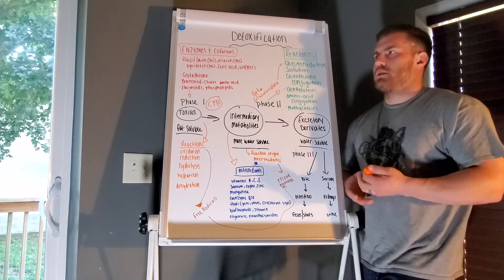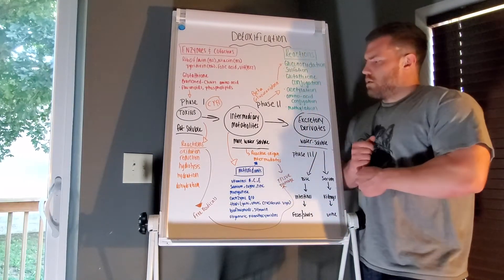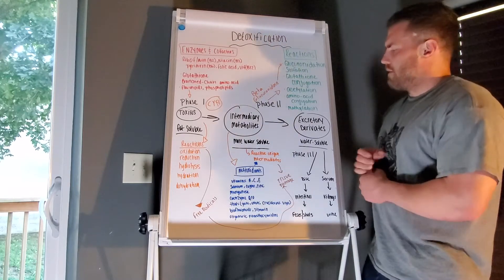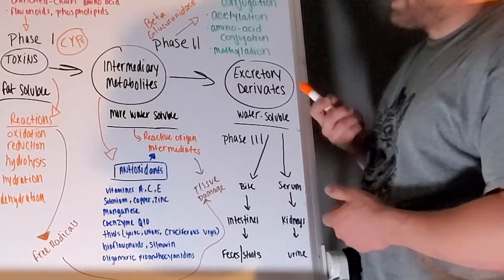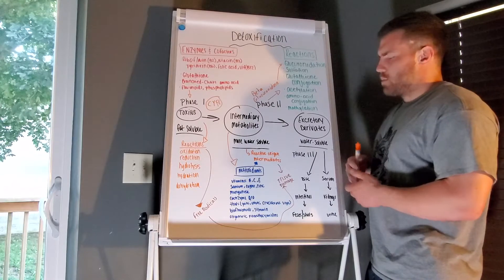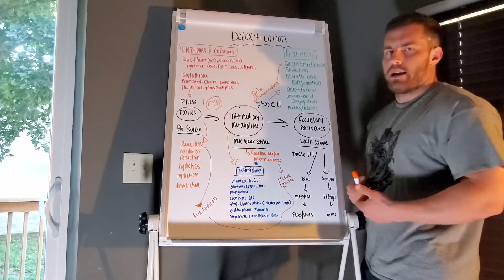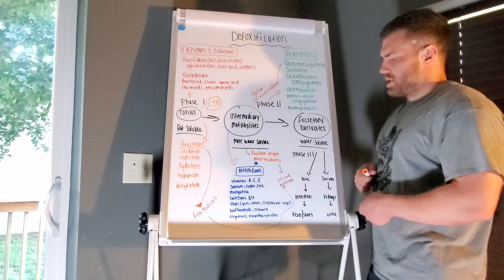We move into Phase 3. Phase 3 is excretory derivatives. This is where you're getting rid of stuff. At this point, everything should pretty much be broken down, ready to go. We're going to have excretion through both the stools and the urine.